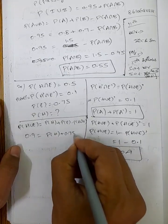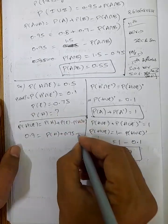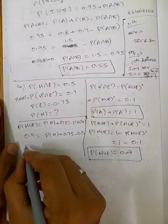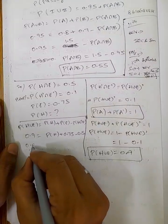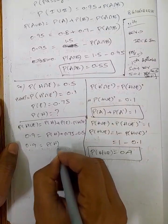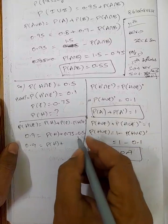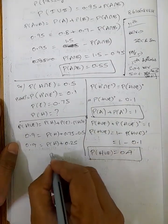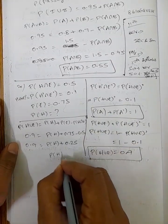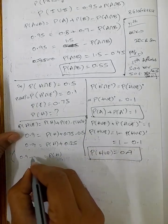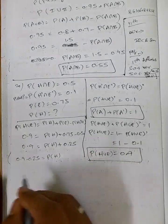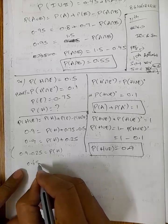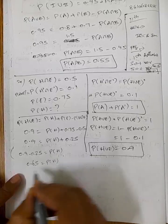So, 0.9 equals P of H plus P of E (0.75) minus P of H intersection E (0.5). So, 0.9 equals P of H plus 0.75 minus 0.5, which is P of H plus 0.25. Therefore, P of H equals 0.9 minus 0.25 equals 0.65.